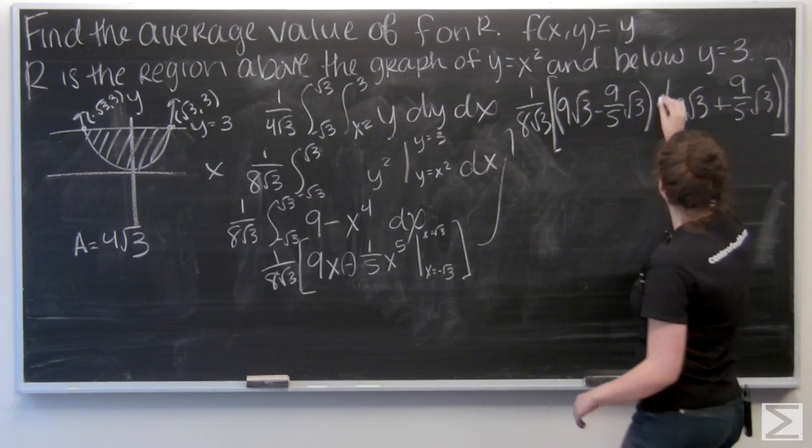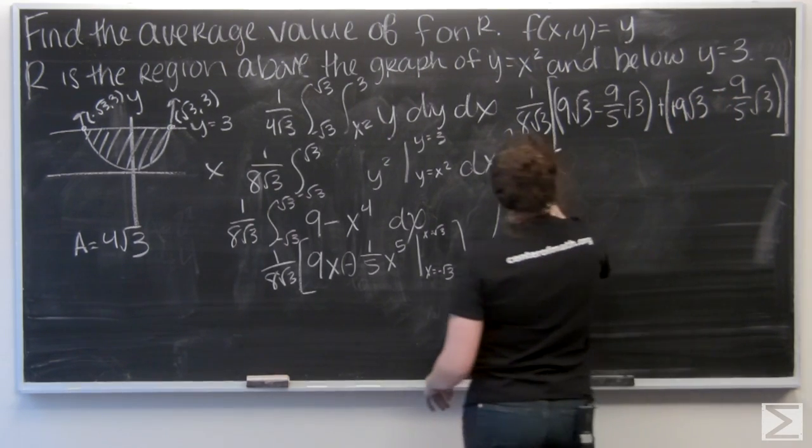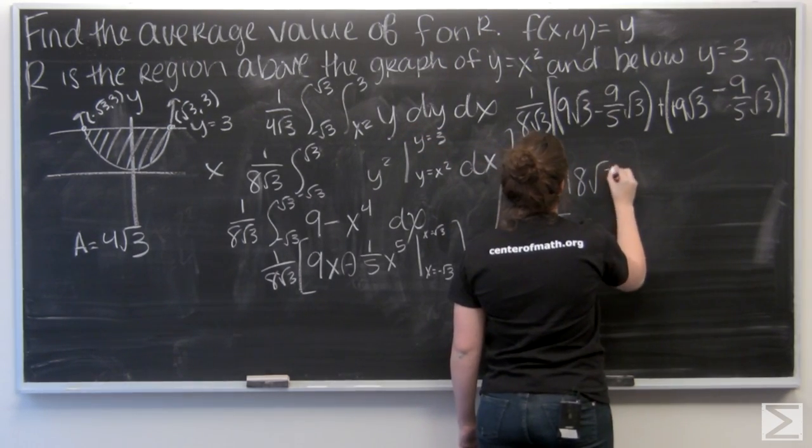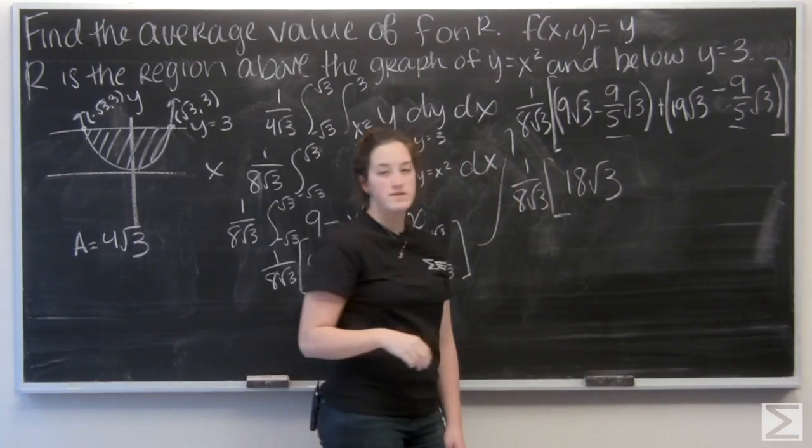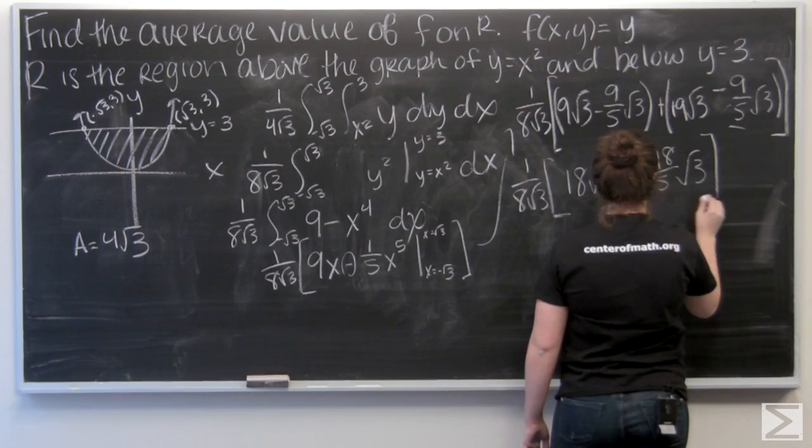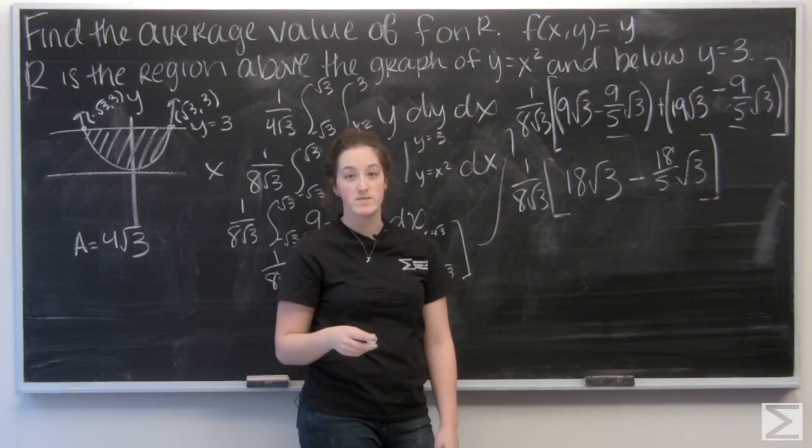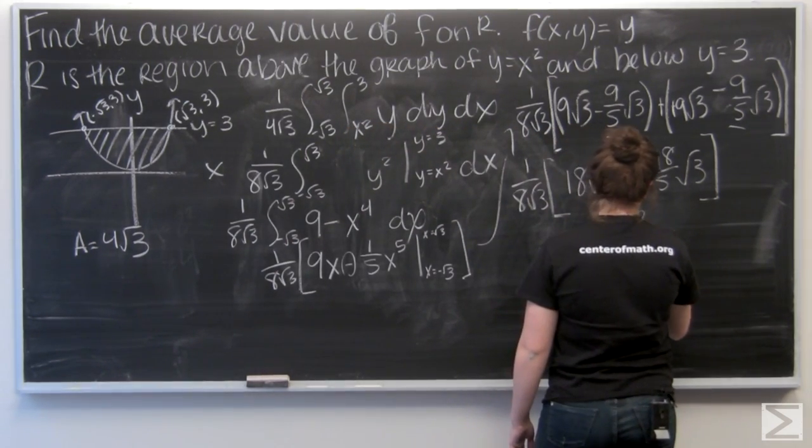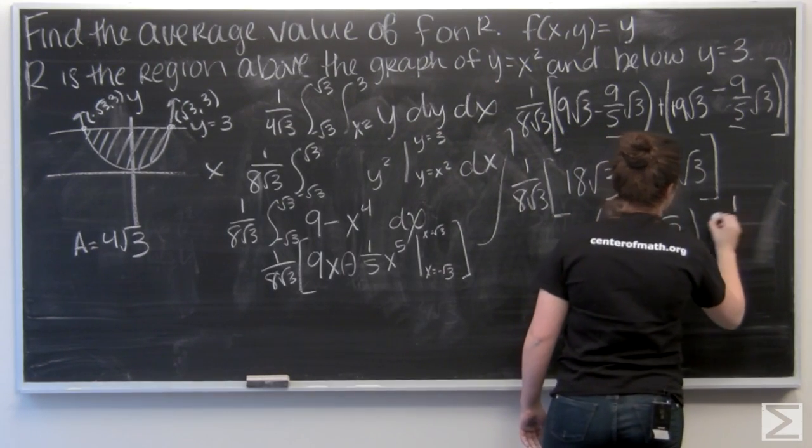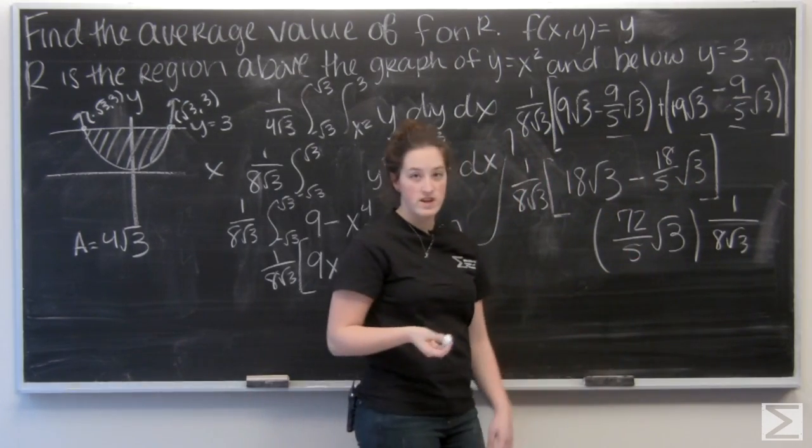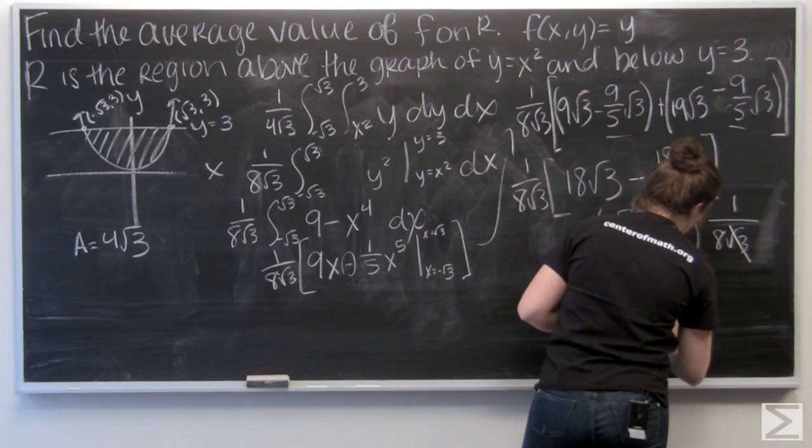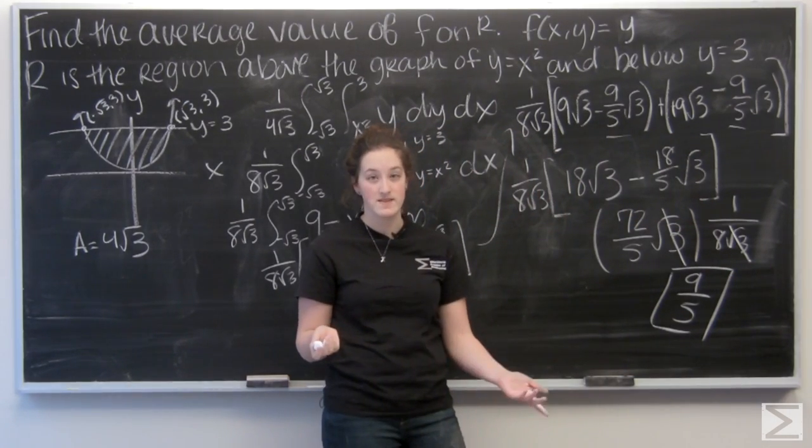So let's add together. So these add to be 18 square roots of 3, and these end up being minus 18 fifths square root 3. So 18 minus 18 fifths becomes 72 fifths times the square root of 3. And then I need to divide by 8 square roots of 3. Well, the root 3's are going to cancel each other out. And 72 will divide by 8 to be 9. So my answer is 9 fifths. And that's the average value of f over our region.